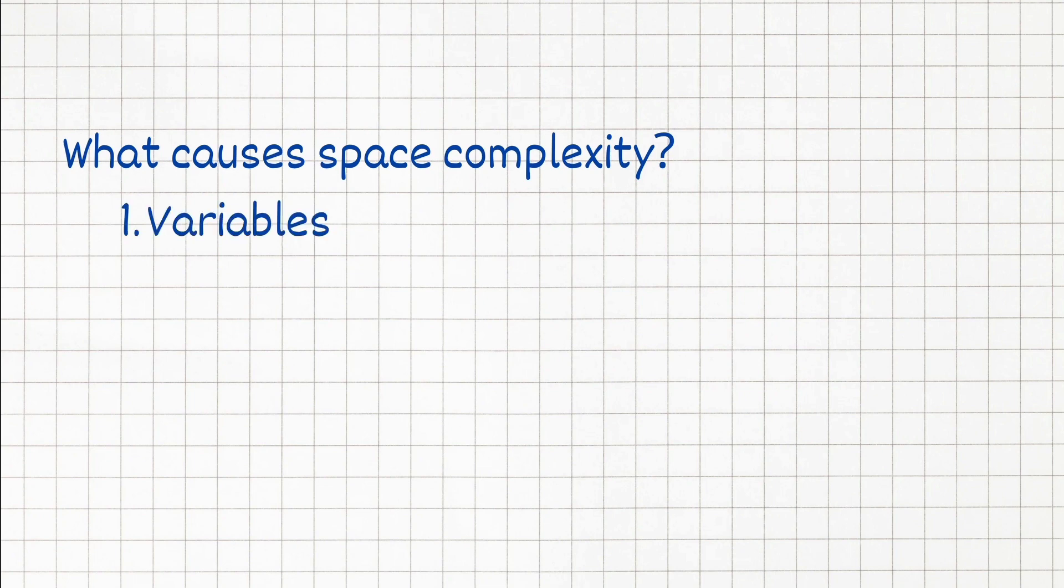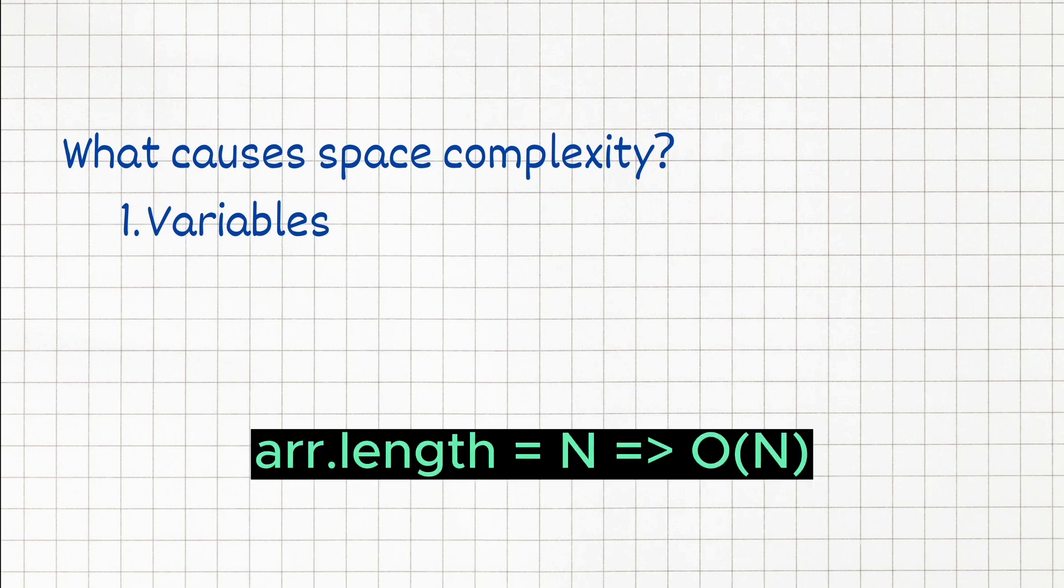First we have variables. The size and number of variables can impact the space complexity. For example if you have an array with N elements, it will require N units of memory to store all the values, and it will be O of N space complexity.